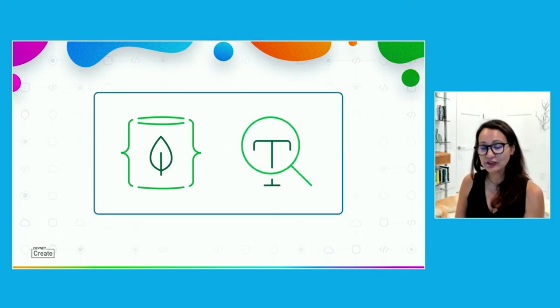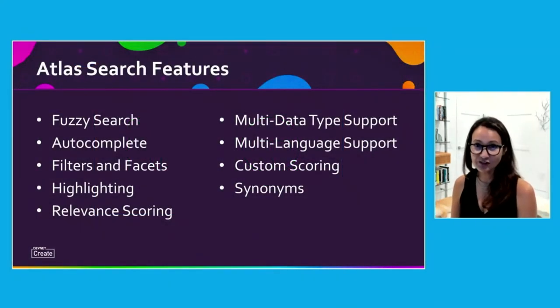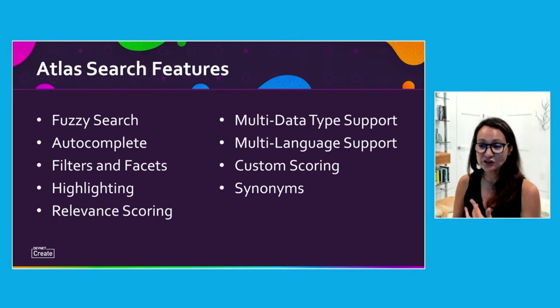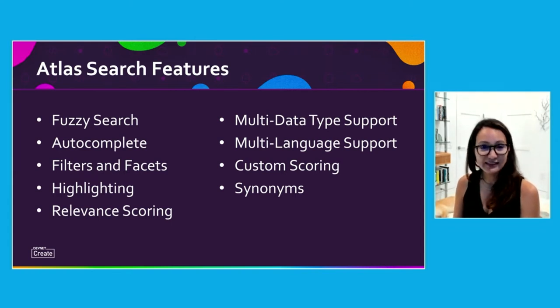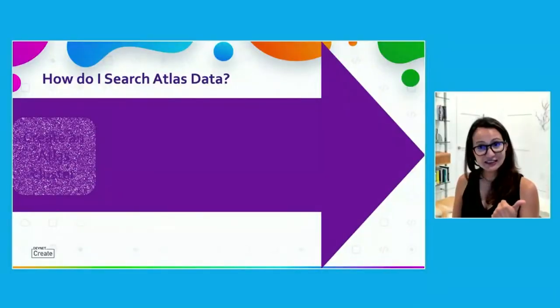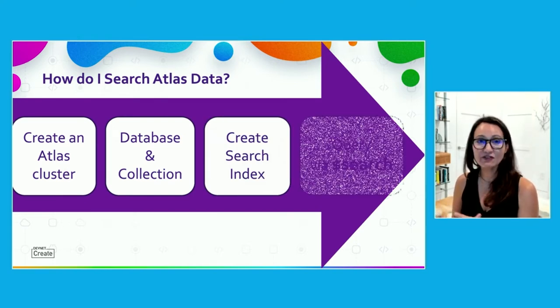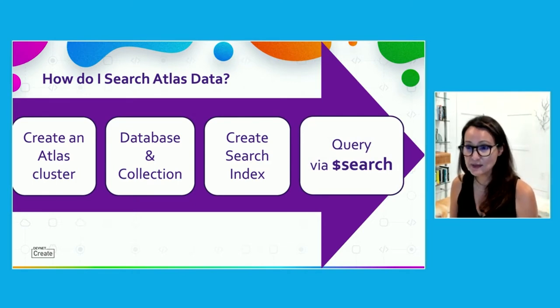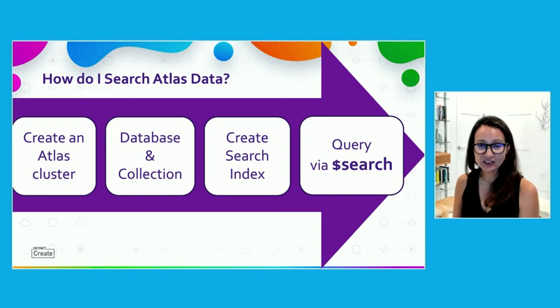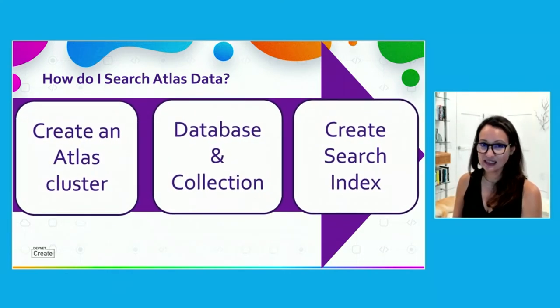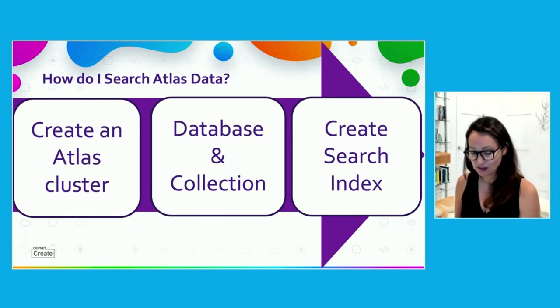Atlas Search brings you a full set of rich search features without that operational overhead. We have fuzzy search, autocomplete, filters, facets, and highlighting. I'm going to build out some of these inside queries in the next 15 minutes or so and show you exactly how easy it is. What I want you to leave today knowing is that there are really only four steps you need to do to search inside your Atlas data: you need to have an Atlas cluster, you need to have data on that cluster, you need to create a search index, and you need to query via the dollar search operator. All four of these steps you can do inside your Atlas interface.